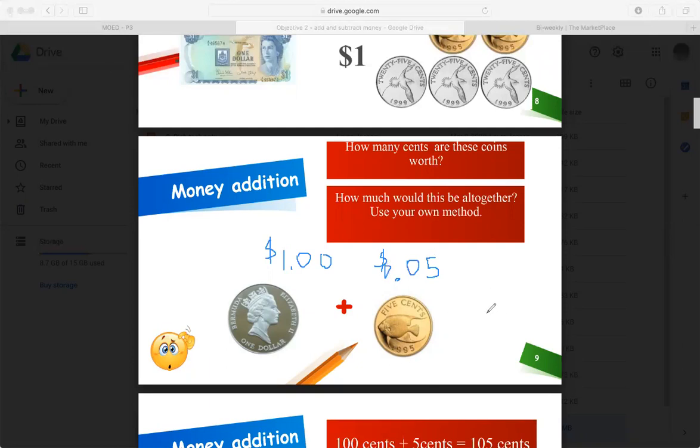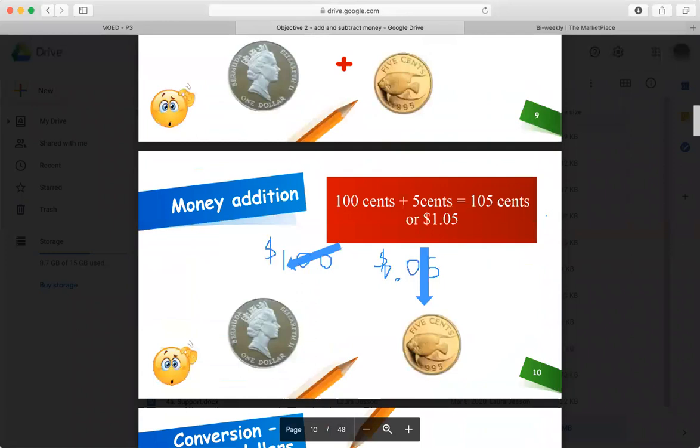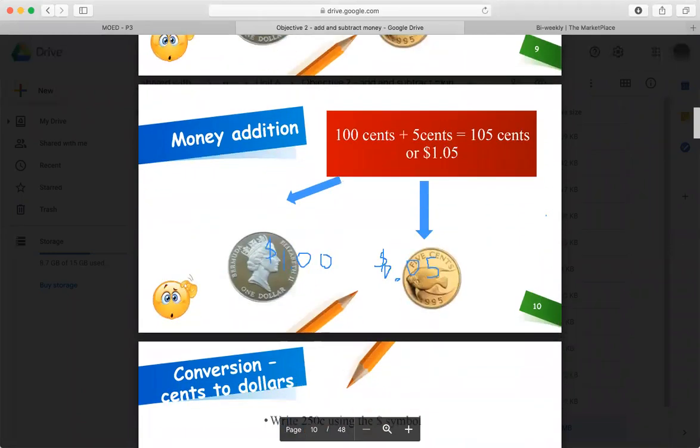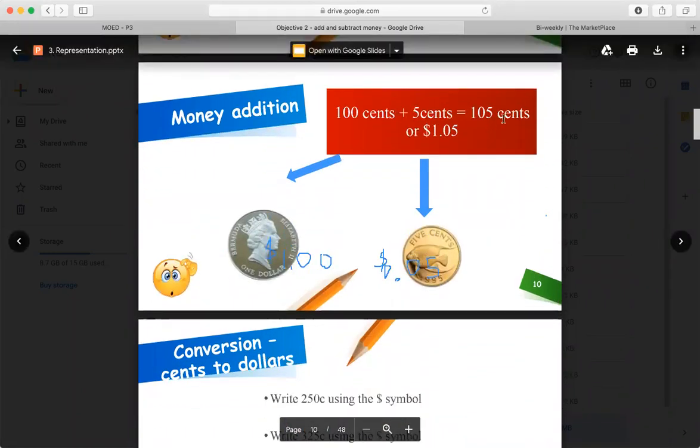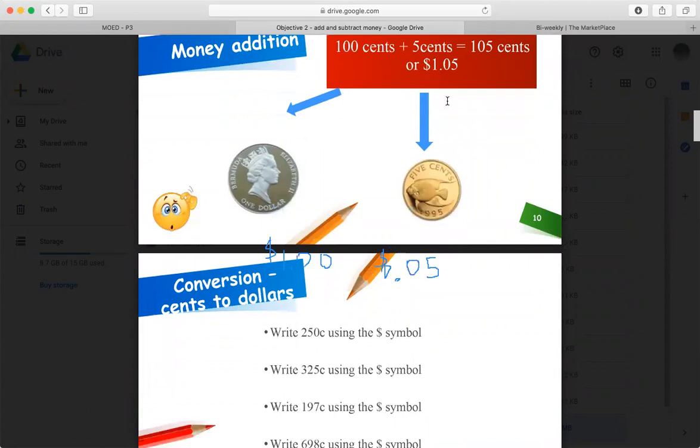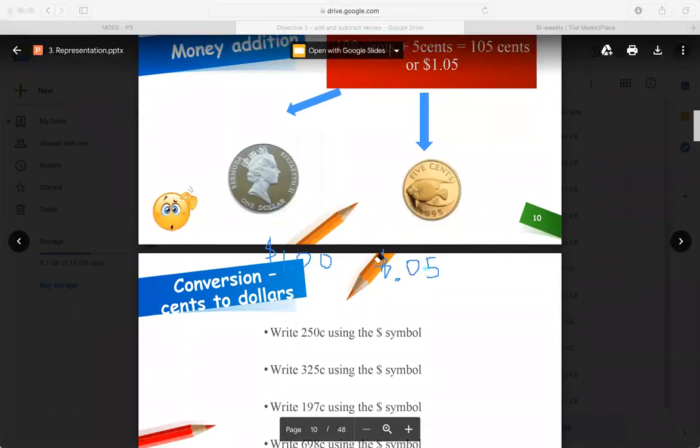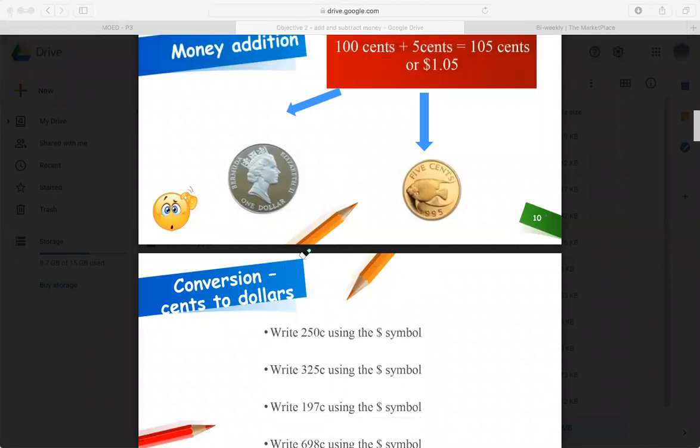So that would equal, oops, I'm going to turn that off now. There we go. So that would equal $0.100 plus $0.05 would be $1.05. Yay, we were right. Let's see if I can raise that now. There we go.